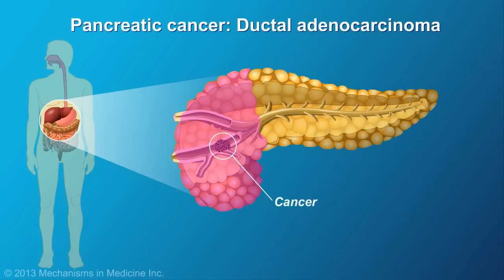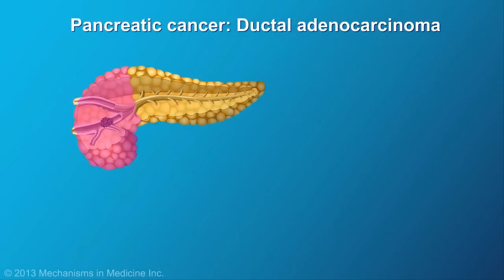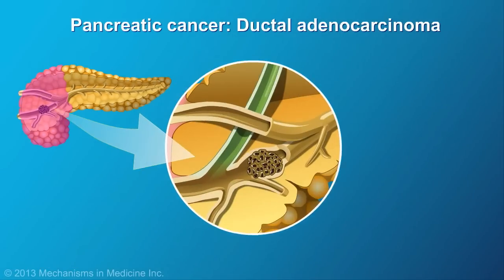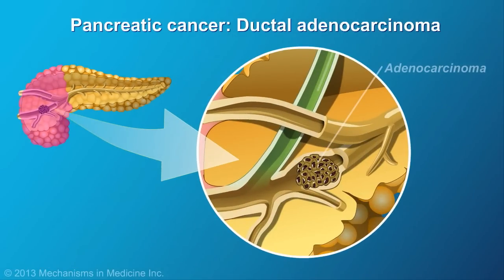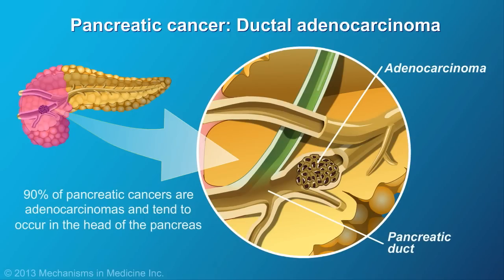Cancer is an abnormal growth of cells. Most cancers of the pancreas are adenocarcinomas that arise in the ducts responsible for producing digestive enzymes to break down food. They tend to occur in the head of the pancreas and may grow quickly.